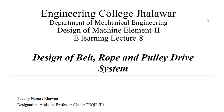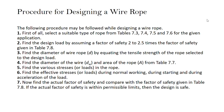In this lecture we will learn the design procedure of the wire rope and design a rope with the help of an example. The basic procedure for designing a wire rope: first, a suitable type of rope is selected for a particular application with the help of tables 7.3, 7.4, 7.5, and 7.6, which were shown in previous lectures. After that, the design load is calculated by assuming a factor of safety 2 to 2.5 times the factor of safety given in table 7.8.